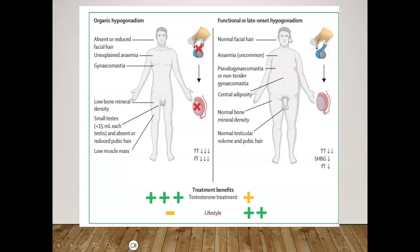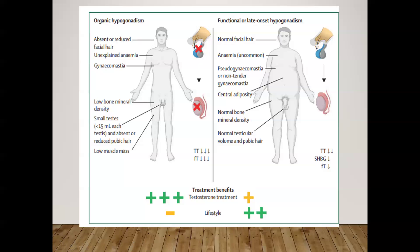In functional or late-onset hypogonadism, the patient may have normal facial hair, anemia is uncommon, and there may be adiposity or pseudo-gynecomastia — non-tender, as in our case. There is central adiposity, normal bone mineral density, normal testicular volume, and normal pubic hair. Total testosterone may appear low due to low SHBG as occurs in obesity, but free testosterone will be low-normal or normal. Testosterone treatment may offer some benefit, but lifestyle changes — exercise and weight loss — are definitively beneficial.